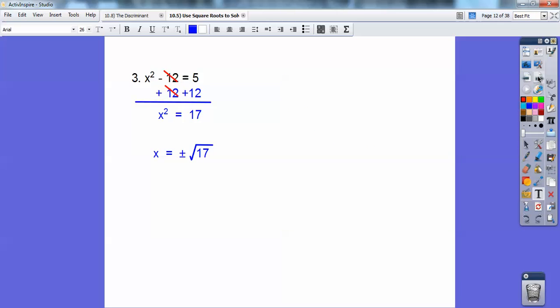Here I'm going to go ahead and add 12 to both sides and get 17. So this time, it's plus or minus the square root of 17. 17 is prime, so that's your answer right there.